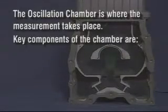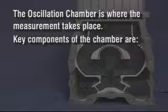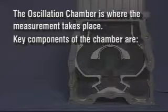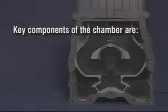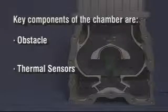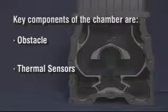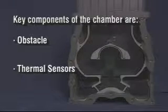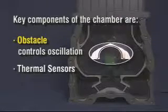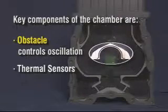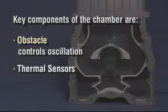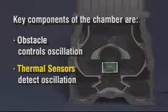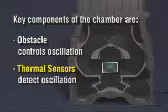The oscillation chamber is where the measurement takes place. Key components of the chamber are the obstacle and the thermal sensors. The obstacle controls the oscillation, and the thermal sensors detect the oscillation.